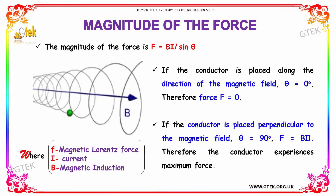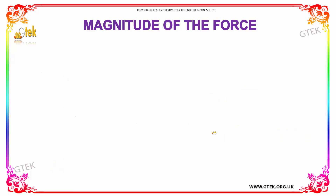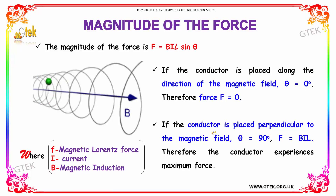The magnitude of the force is F = B·I·L·sinθ. If the conductor is placed along the direction of the magnetic field, θ becomes 0, which indicates the force F is equal to 0.